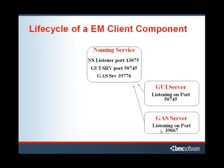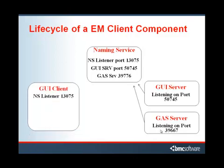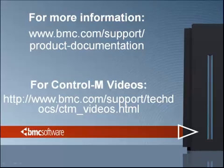All the other additional server components register in the Naming Service just the same. When you start a client utility such as the GUI Client, it reaches out and talks to the CORBA Naming Service on port 13075 and looks for the resource it needs. In this case, that's the GUI Server, which it finds at port 50745. It then initiates a connection directly to the GUI Server to handle its request.